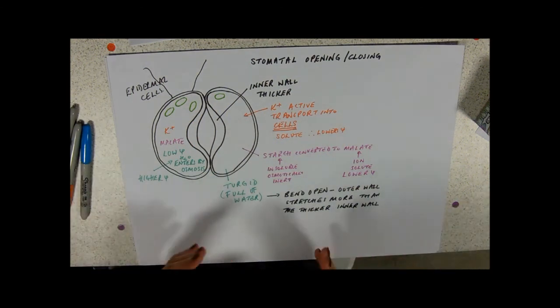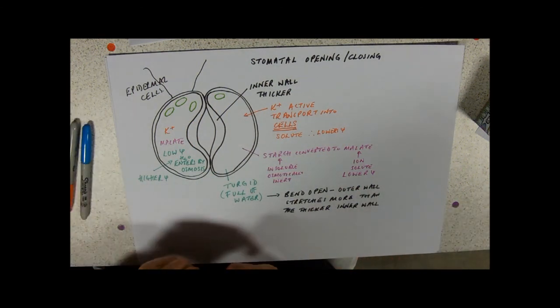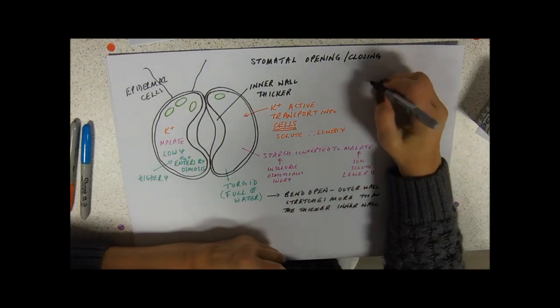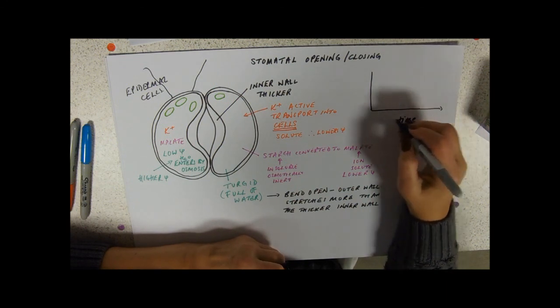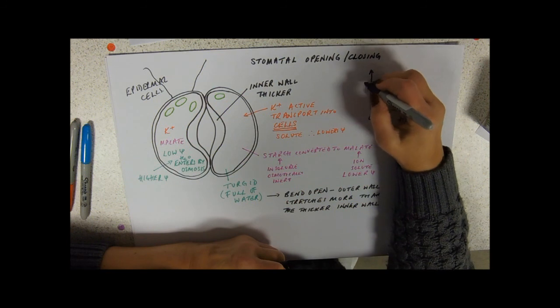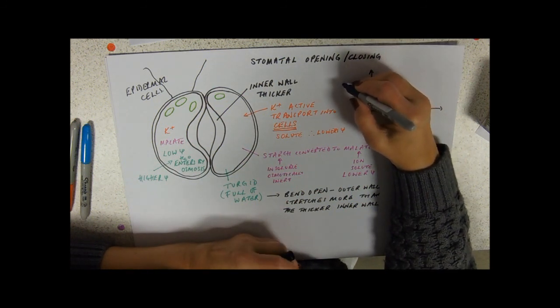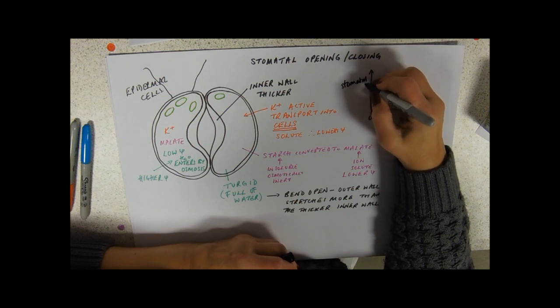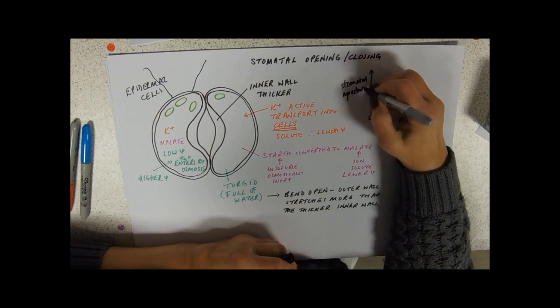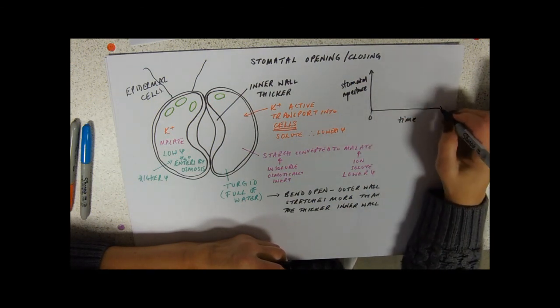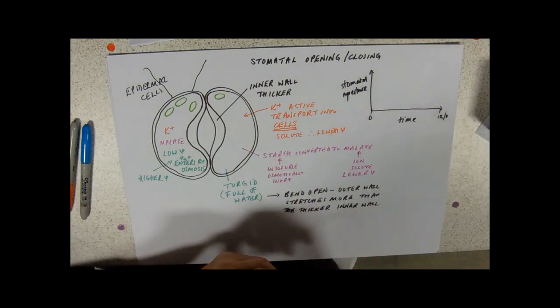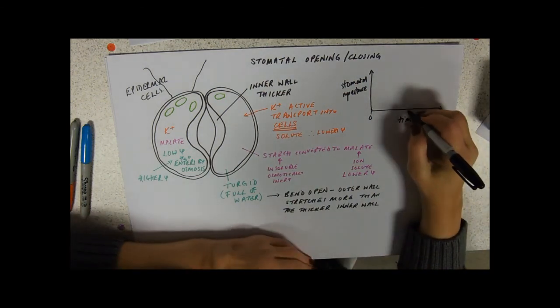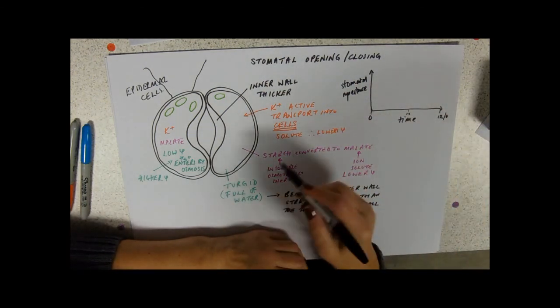So if you did a little graph of stomatal opening with time along here and a degree of openness, you'll often see that - the stomatal aperture, and aperture is a hole and it's how big that hole is - and we started at midnight and we're going to midnight at that side and 12 noon. Now you only need stomata open during the day, so they're going to be closed at night, a little aperture.